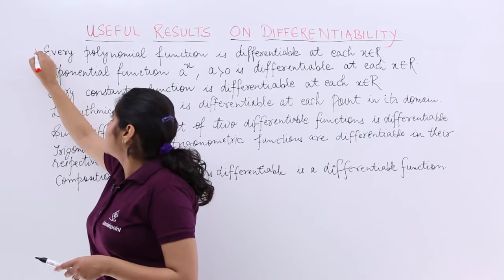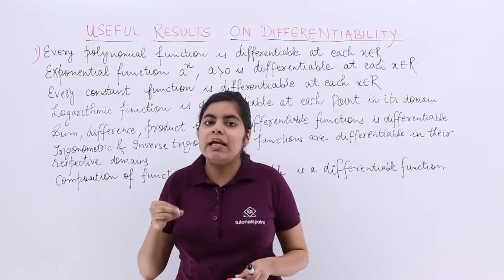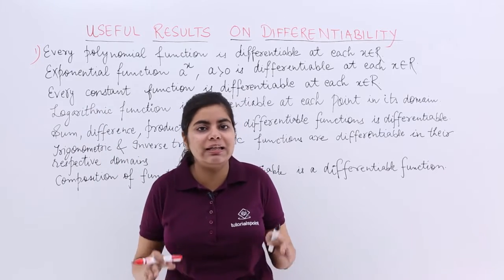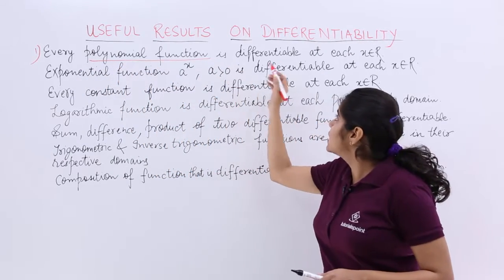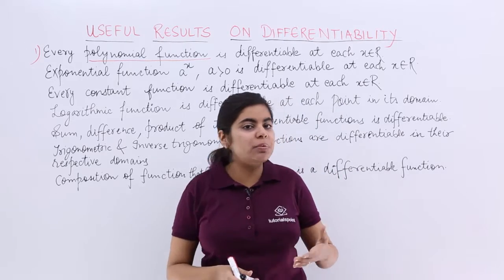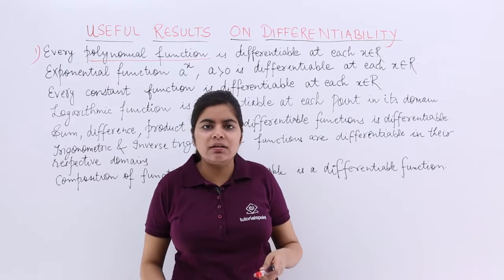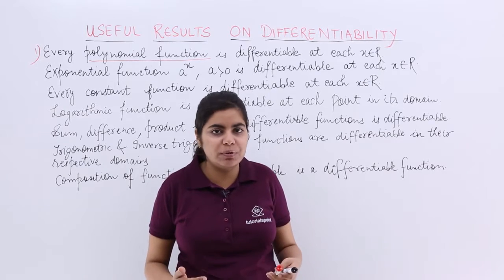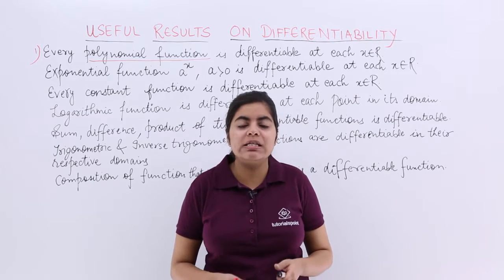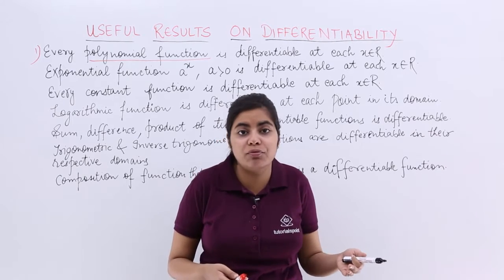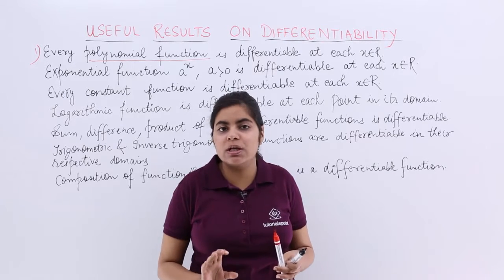The first in line is the polynomial function. You have to learn these points and keep them in mind, so that if you find any of these functions, you don't have to solve and you just say it is a differentiable function. Every polynomial function is differentiable at each x belonging to ℝ, the real numbers. So if I have a polynomial function like ax² + bx + c, I will say it is differentiable at each x belonging to real numbers — no need to check right-hand and left-hand derivatives.